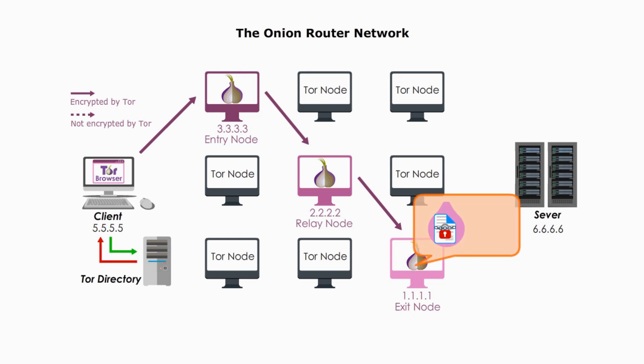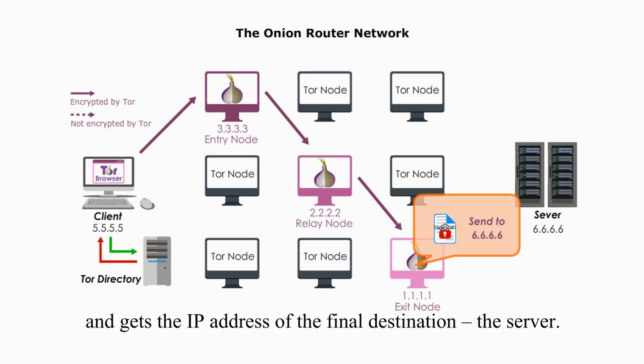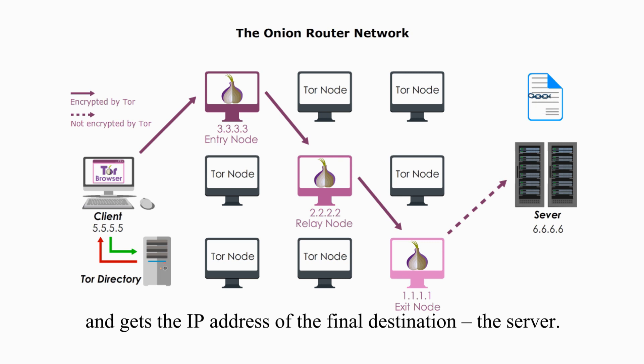The third node is called the exit node. When the exit node gets the package, it peels the last layer of the encapsulated package and gets the IP address of the final destination — the server.